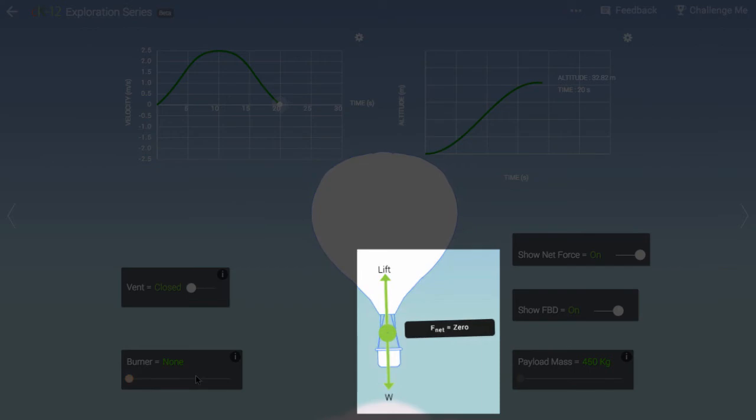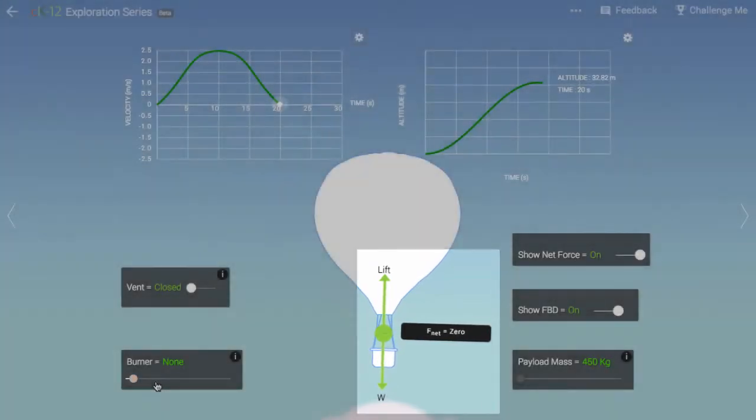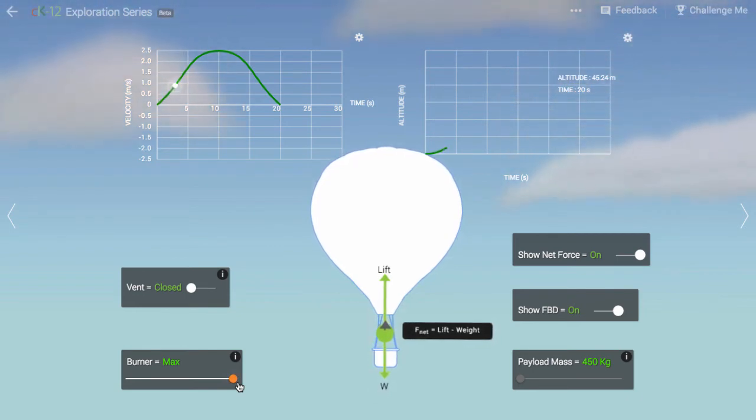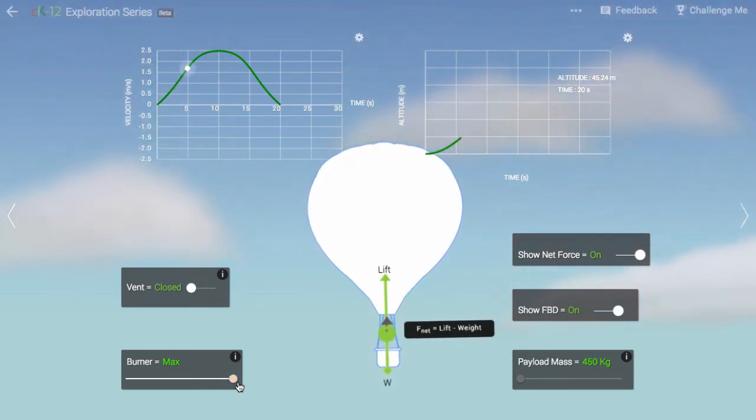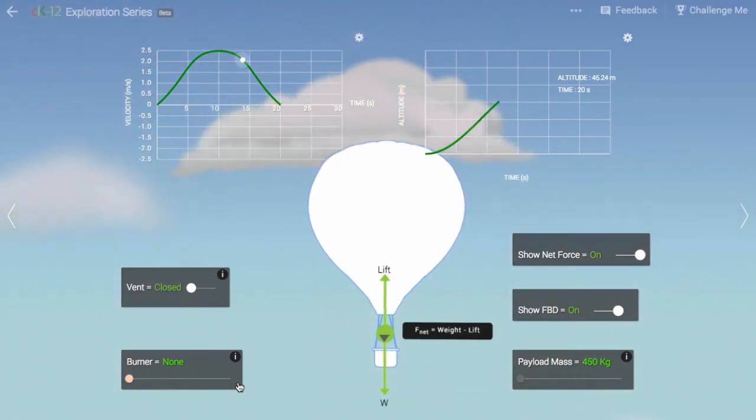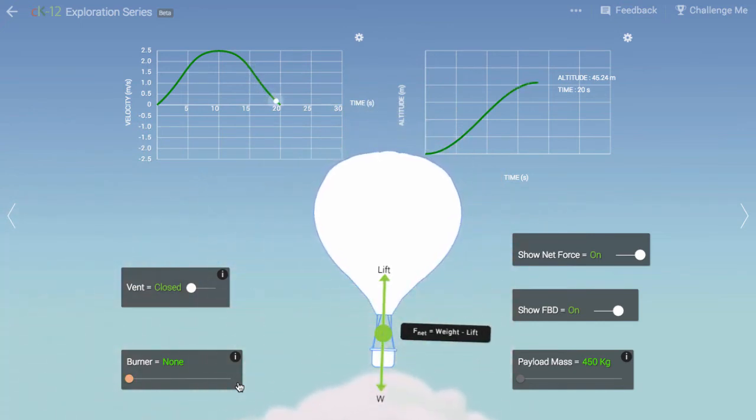Let's watch the lift force, weight force, and their difference, the net force, as we add heat to the balloon. You'll see the net force vector is represented in gray. See it grow and shrink, positively and negatively. The balloon first accelerates upward, then downward, while still moving upward the whole time.